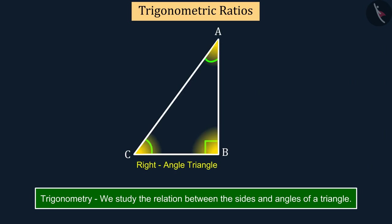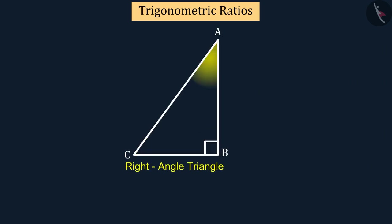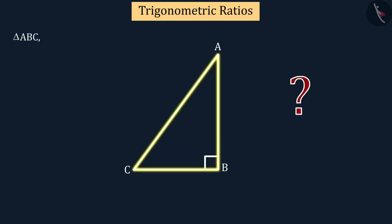Let us now consider this right angle triangle in which angle B is the right angle and angles A and C are acute angles. Which side is the hypotenuse in this triangle? We know that in a right angle triangle, the opposite side of the right angle is the hypotenuse.